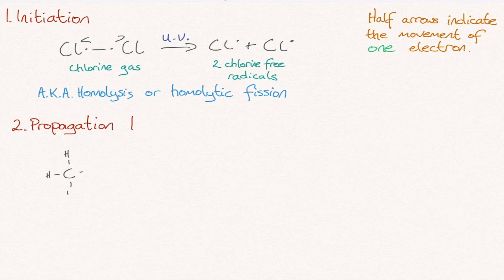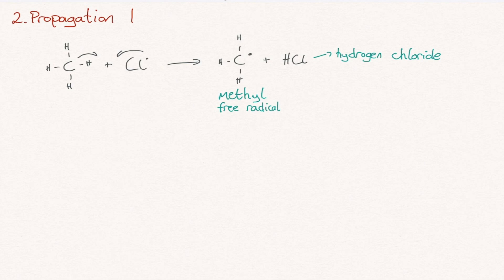Step 2, Propagation 1. The chlorine free radical attacks the methane to form methyl free radical and hydrogen chloride. Note we call HCl hydrogen chloride and not hydrochloric acid, as hydrogen chloride is a gas and it is a gas that is produced here.